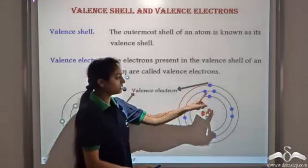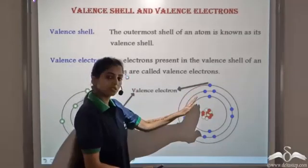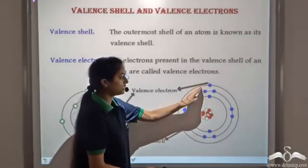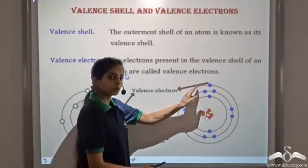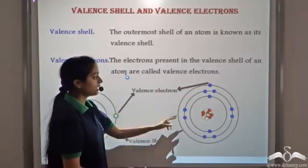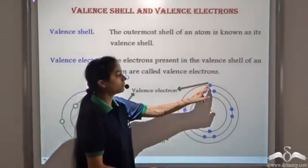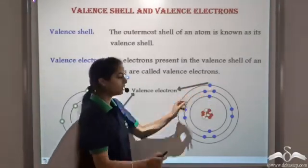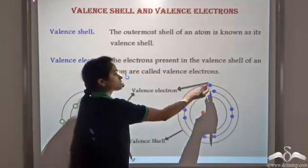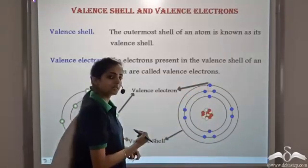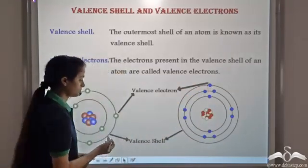Similarly, this atom has three shells. So the third shell, which is the outermost shell, is known as its valence shell and this has only one electron in the valence shell. So this one electron is known as its valence electron.